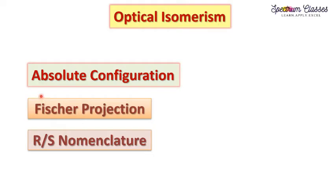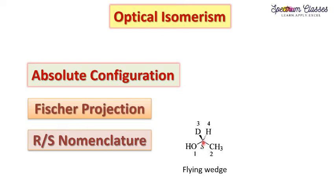Hello everyone, welcome to my channel Spectrum Classes. Today in this video we are going to discuss about the absolute configuration, Fischer projection and RS nomenclature of molecules. Before discussing all these terms, let us have a recap of our previous video. In the previous video we discussed optical isomerism, which is shown by chiral molecules — either the molecule is chiral or it has a chiral center. The chiral center is the presence of a chiral carbon: the carbon which is sp3 hybridized.